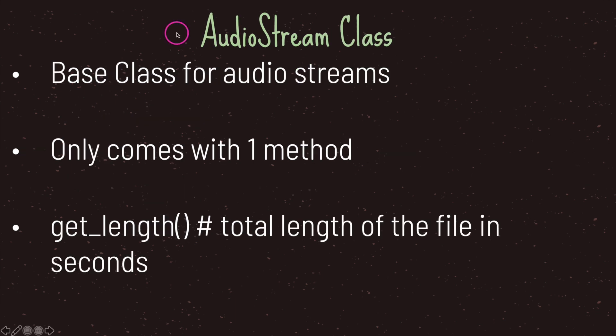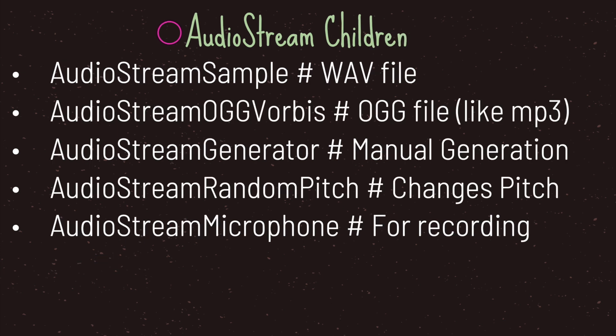The AudioStream class is the base class for audio streams. It has no properties and only one method called get_length, which returns a float representing the total length of your audio file in seconds. The AudioStream class has five child classes: AudioStreamSample, which handles WAV files, and AudioStreamOGGVorbis, which handles OGG files — a compressed format similar to MP3s.